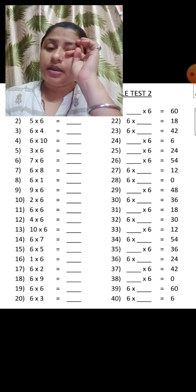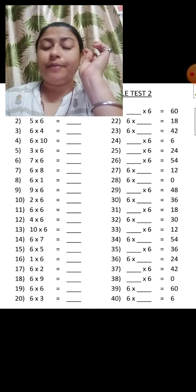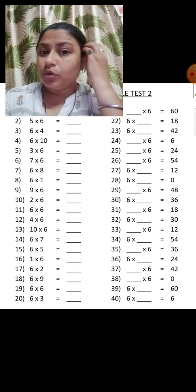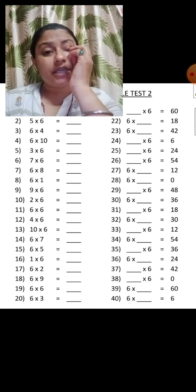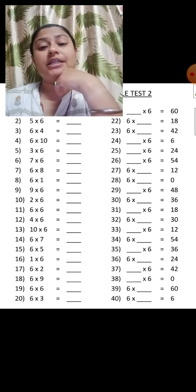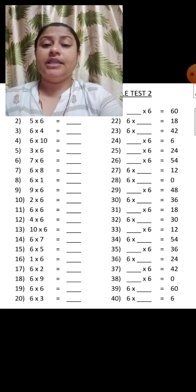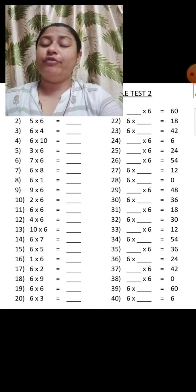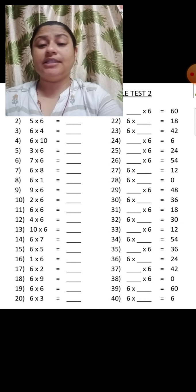We have seen the table of 6. So the table of 6 is: 6 ones are 6, 6 twos are 12, 6 threes are 18, 6 fours are 24, 6 fives are 30.